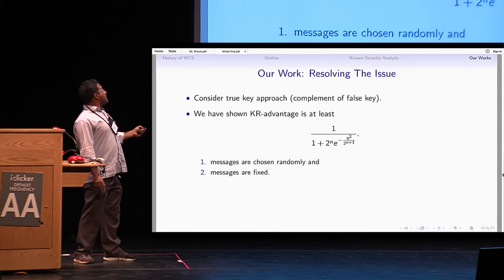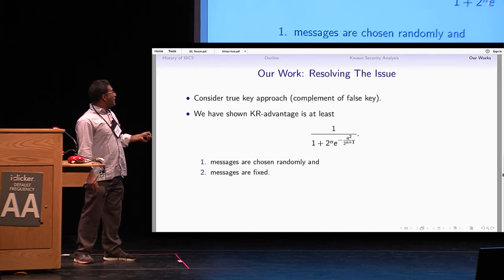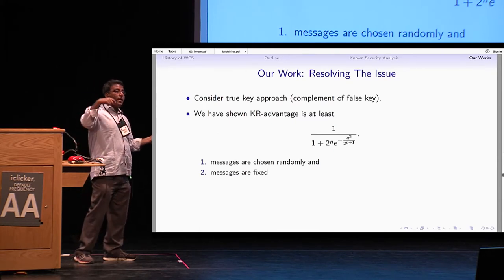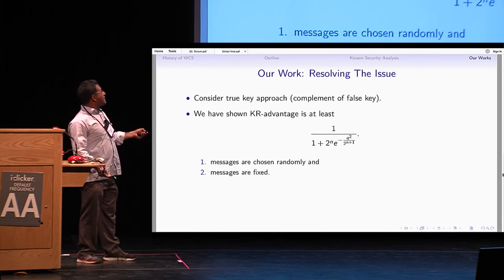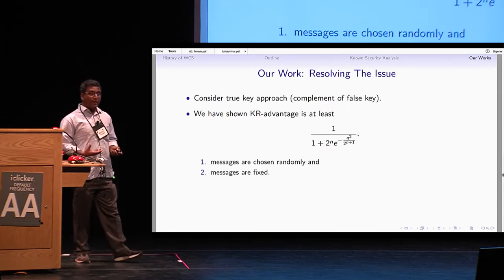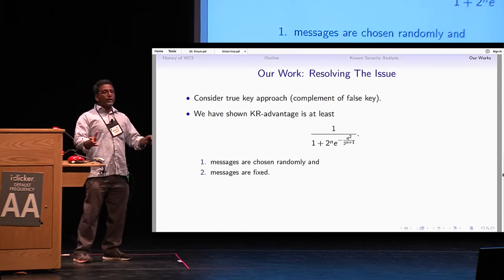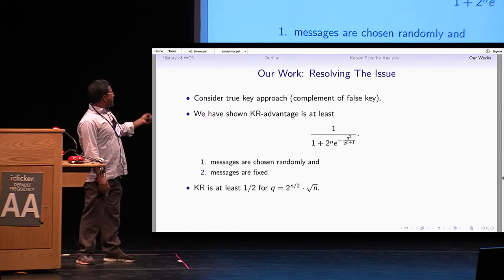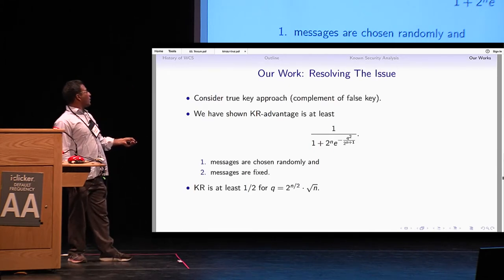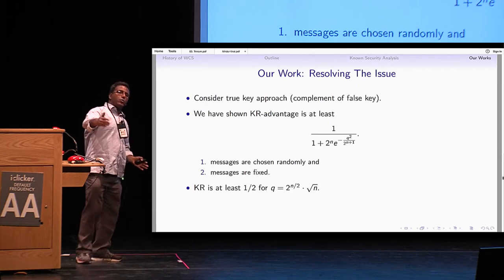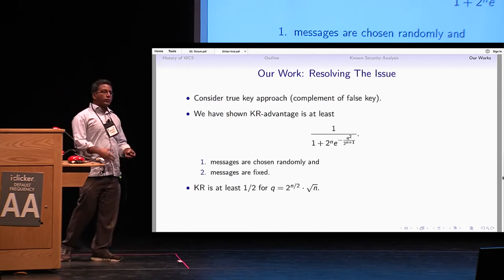What we showed is that the key recovery advantage is at least (1 / 2^n) · e^{-Q²/(2^n + 1)}. When Q is of order 2^(n/2) · √n, this term becomes close to 1, giving a key recovery advantage of at least 1/2. So you need to go beyond 2^(n/2) queries before gaining meaningful advantage — this proves the tightness of the Bernstein bound. We also extend the analysis to GCM, showing tightness of the GCM bound.